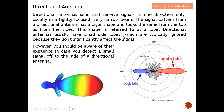Directional antennas usually have small side lobes, which are typically ignored because they don't significantly affect the signal. There is a main lobe, and also a back lobe at almost 180 degrees from the main lobe. Additionally, there are very small side lobes. You should be aware of side lobes in case you detect a weak signal off to the side of a directional antenna.